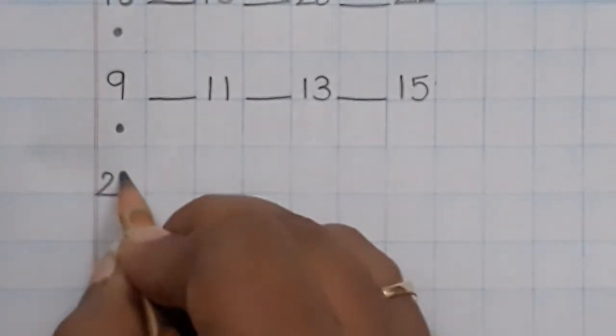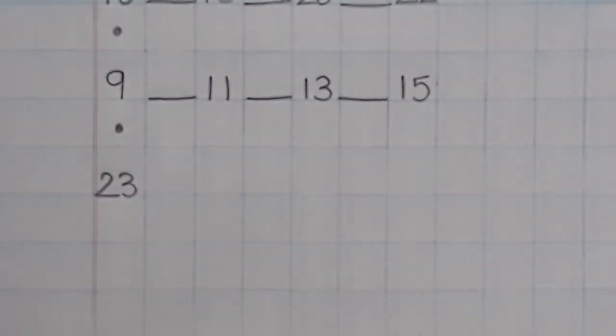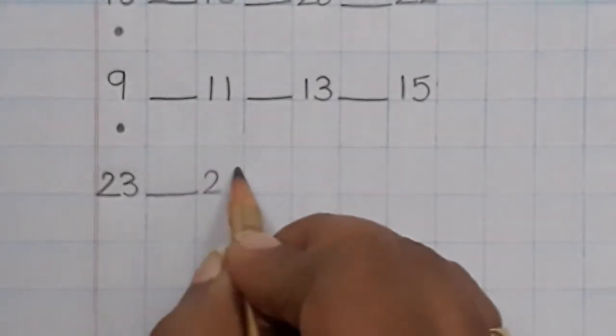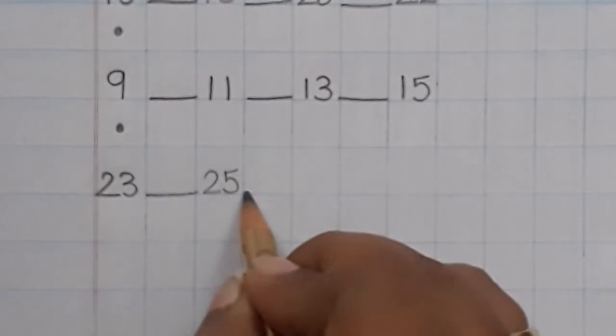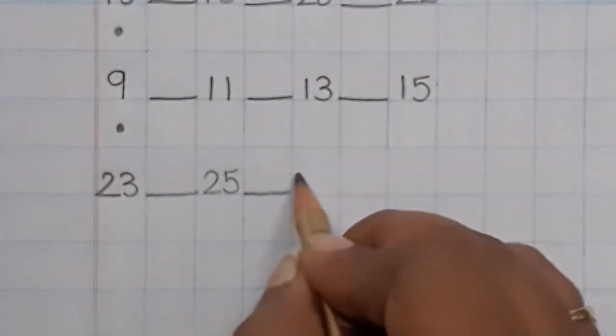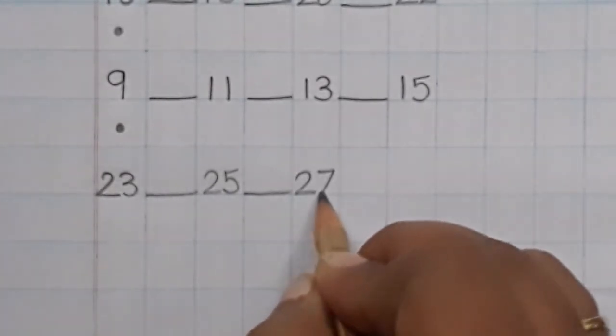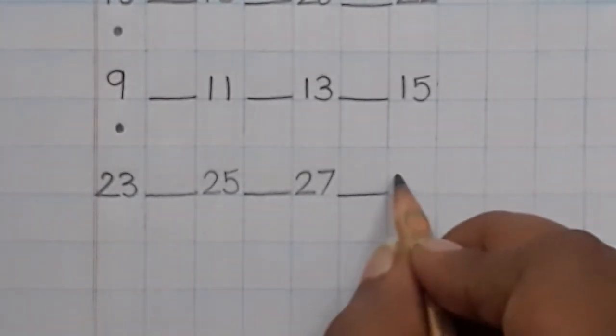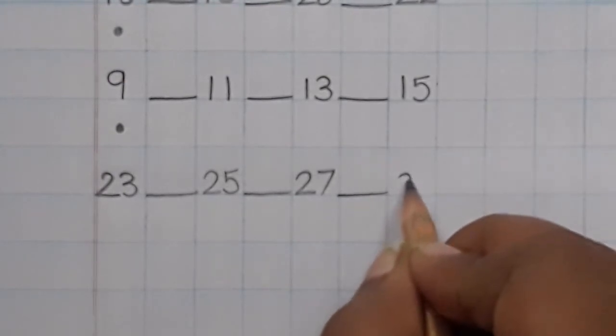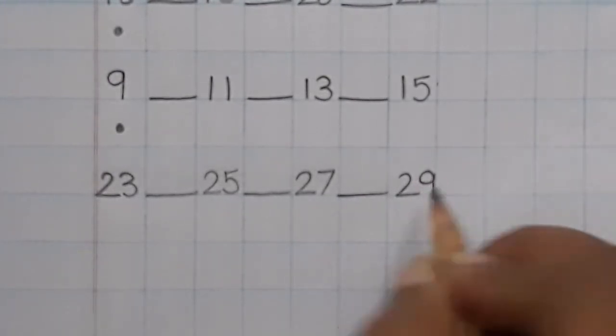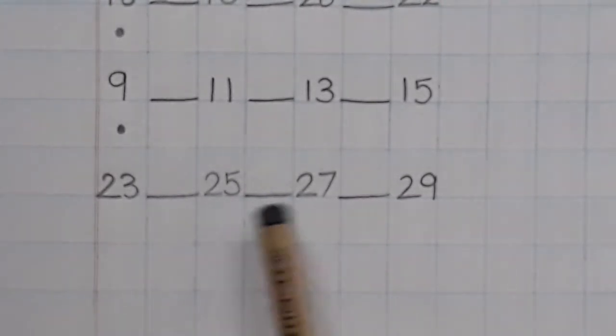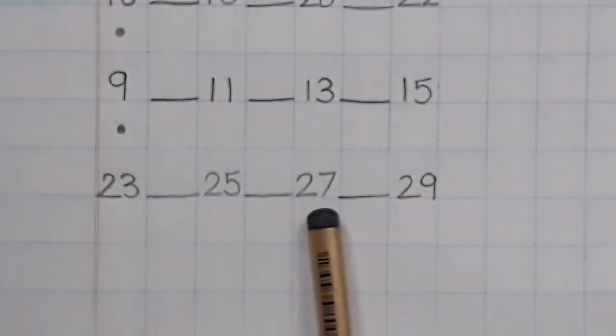Write number 23 in the same box, put a dash, write number 25, put a dash, write number 27 (please write neatly), put a dash, and write number 29. 23 dash 25 dash 27 dash 29.